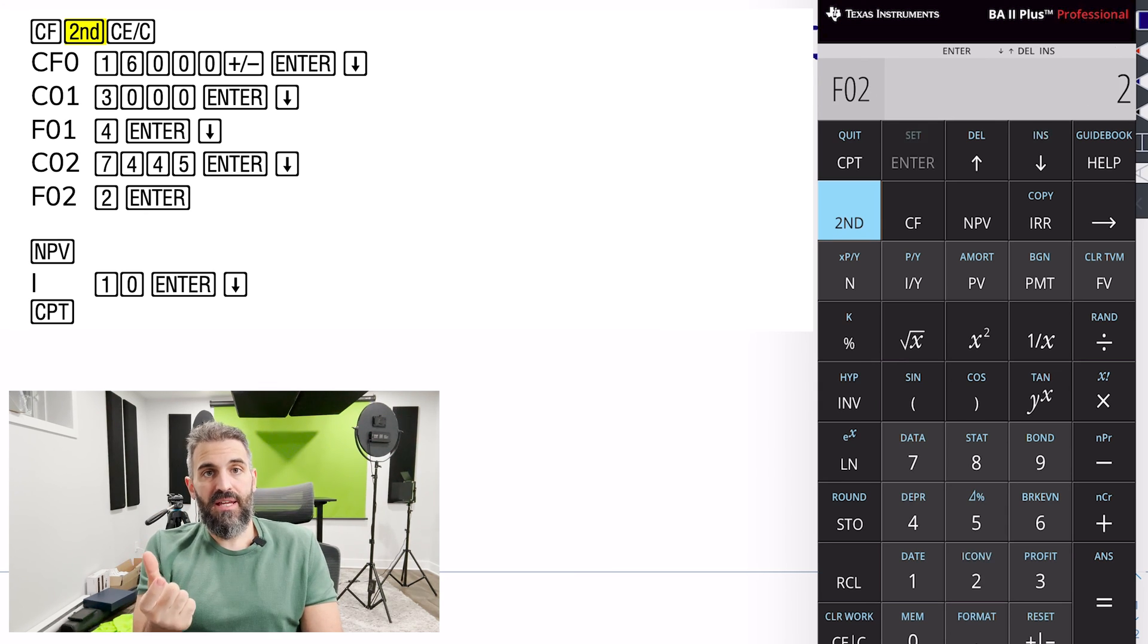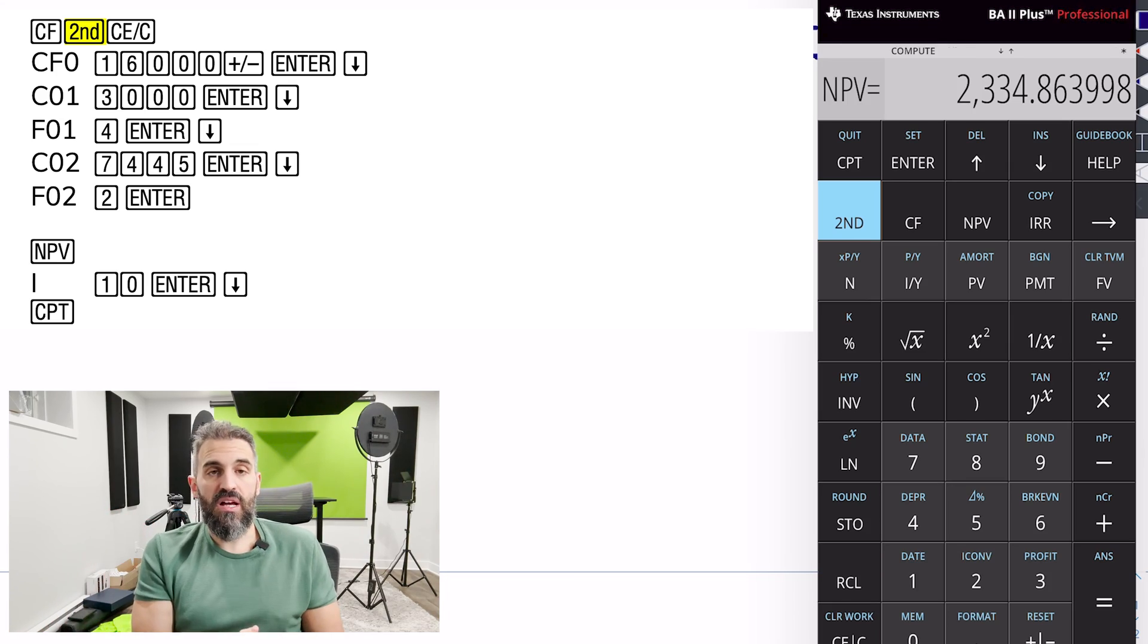7,445 with a frequency of 2. Then you'll press the net present value button, set your discount rate to 10%, enter, arrow down, compute, and you'll have your net present value of the same thing, 2,335.